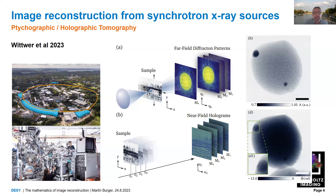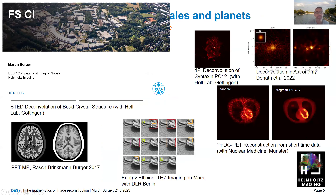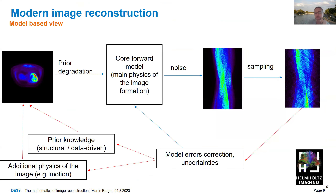Also, on modern synchrotron sources — and we even want to build a much larger one in Hamburg — there is an enormous computational problem because the image and tomogram sizes are massive. It's even a problem to store them on parallel computers. In my group we deal with all these kinds of problems across the Helmholtz Association, from nano imaging to macroscopic imaging, even including terahertz imaging for a Mars robot.